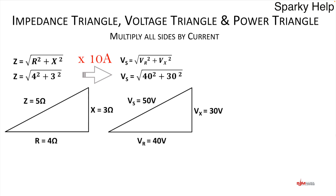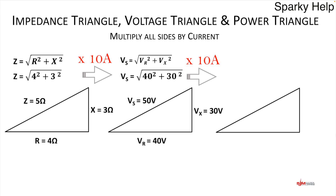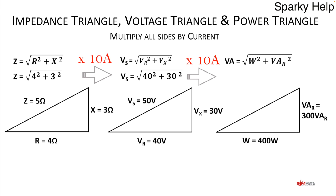We can multiply each side by 10 again to get the power triangle. 10 times 40 gives 400 watts. 10 times 30 gives 300 VAR — the reactive power. We can work out the VA: 10 times 50 gives 500, and applying Pythagoras — watts squared plus VAR squared, then square root — also gives 500 VA. Ultimately all three are 3-4-5 triangles.